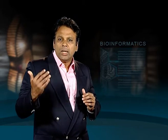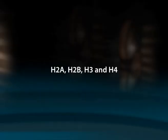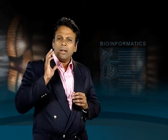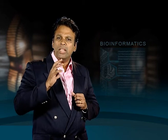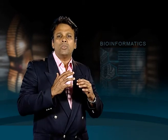Some histones function as spools for the thread-like DNA to wrap around. Histone proteins are of two types: core histones and linker histones. Core histones are H2A, H2B, H3, and H4. Two of each of these core histone proteins assemble to form one octameric nucleosome core particle, and 147 base pairs of DNA wrap around this core particle.